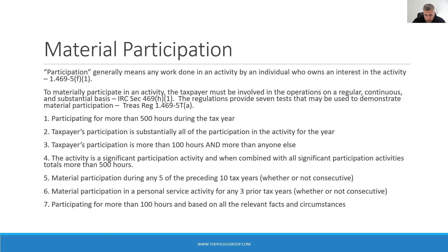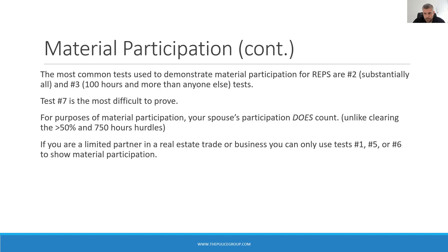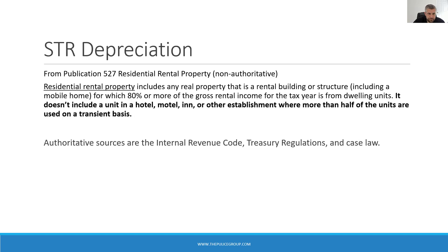The final test requires participation of more than 100 hours and is based on all the facts and circumstances. This is generally the most difficult to prove out of the seven tests. You only need to pass one of the seven tests to show material participation. The most common tests for real estate investors are number two, the substantially all test, and number three, the 100 hours and more than anyone else test. As a note, if you're a limited partner, then you can only use tests 1, 5, or 6 to show material participation.